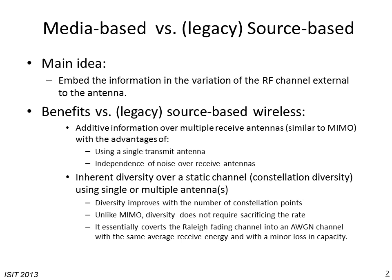This inherent diversity essentially converts the channel into an AWGN channel, so the fading is gone. This diversity doesn't come at the cost of sacrificing the rate, because in a MIMO system it is well known that we can sacrifice the multiplexing gain to obtain additional diversity. As we will see, this feature converts the radio fading channel into an AWGN channel with the average energy received. The average energy received over one constellation will be the same as the statistical average energy of the fading statistic, and we will have only a minor loss in capacity due to the randomness of the constellation points.